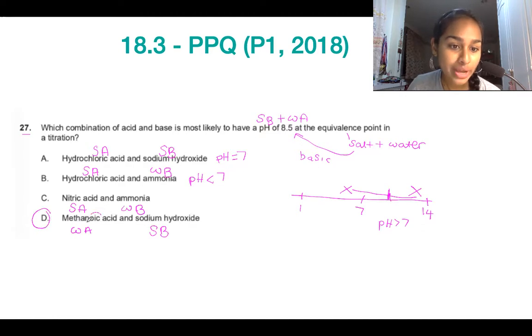Remember, oic means that it's a carboxylic acid. So it has a COOH functional group. This is an organic acid. So all organic acids we consider weak acids.